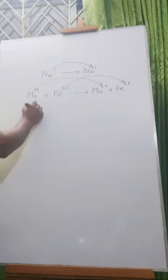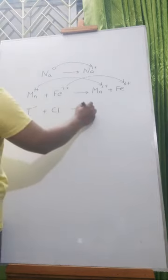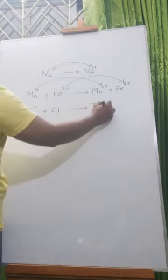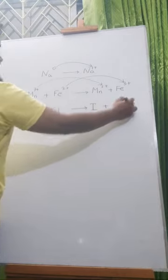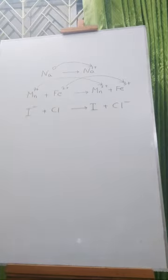Iodine minus plus Chlorine. This will give iodine plus Cl-. Iodine is oxidized and Cl is reduced.